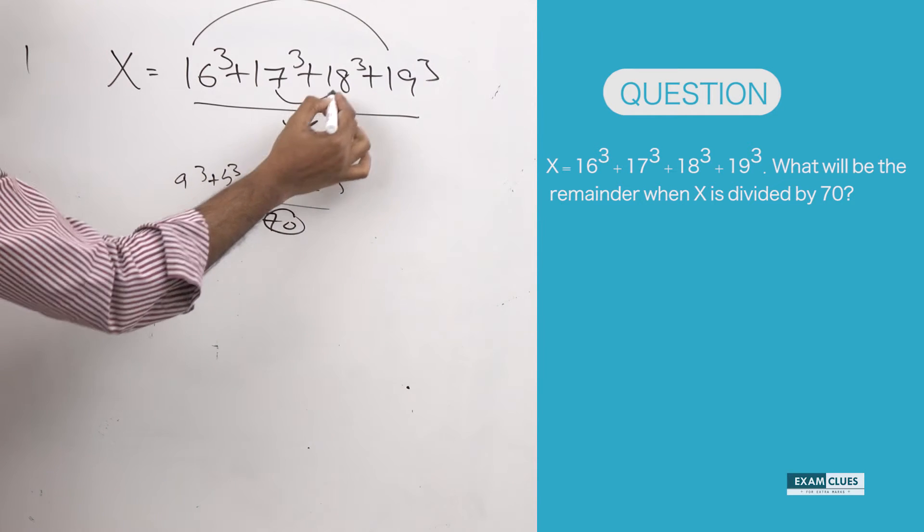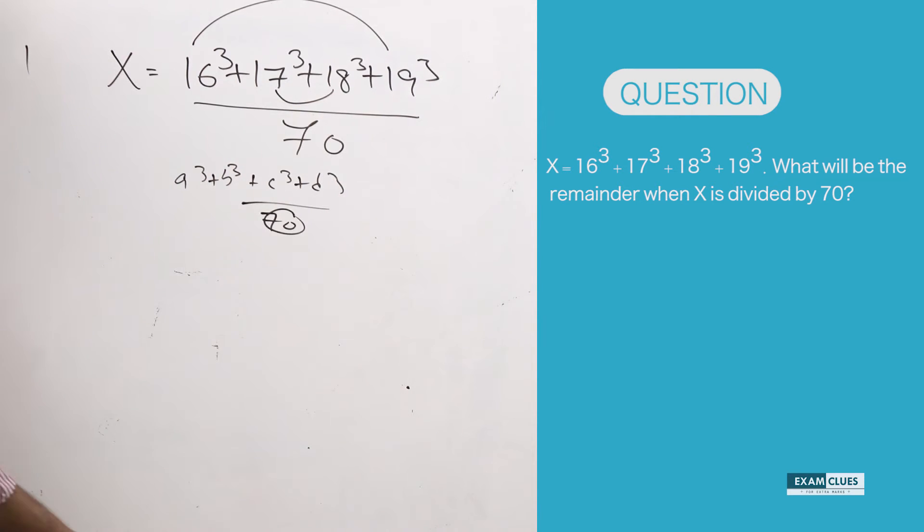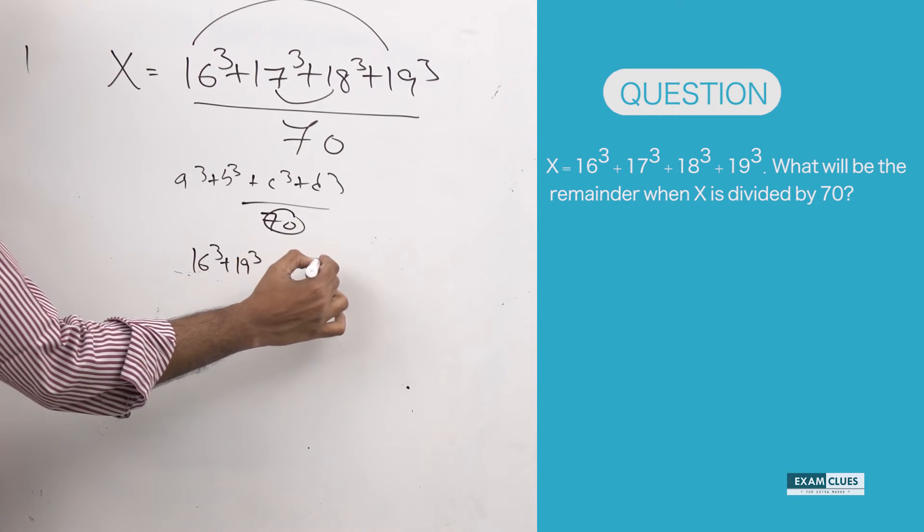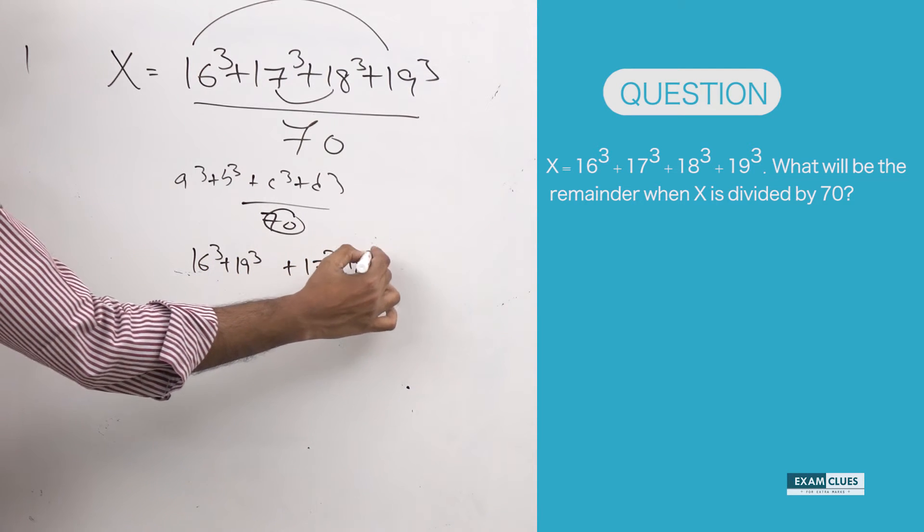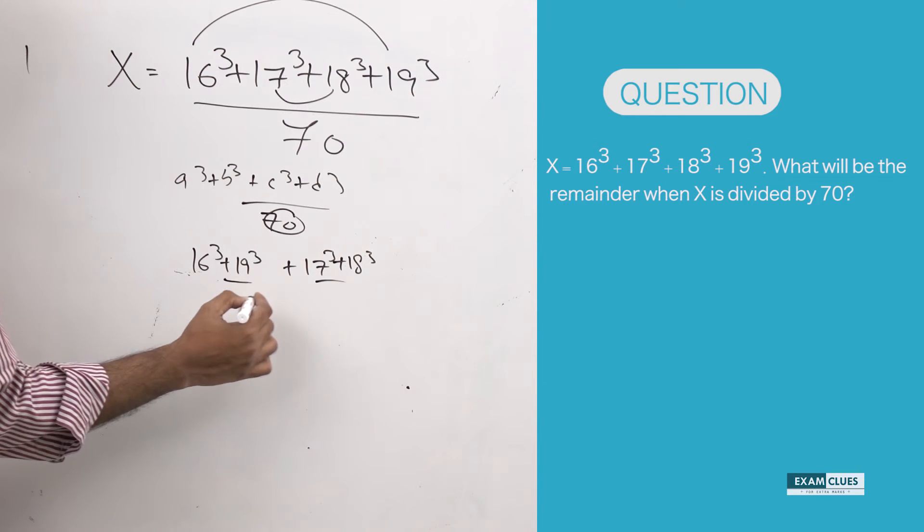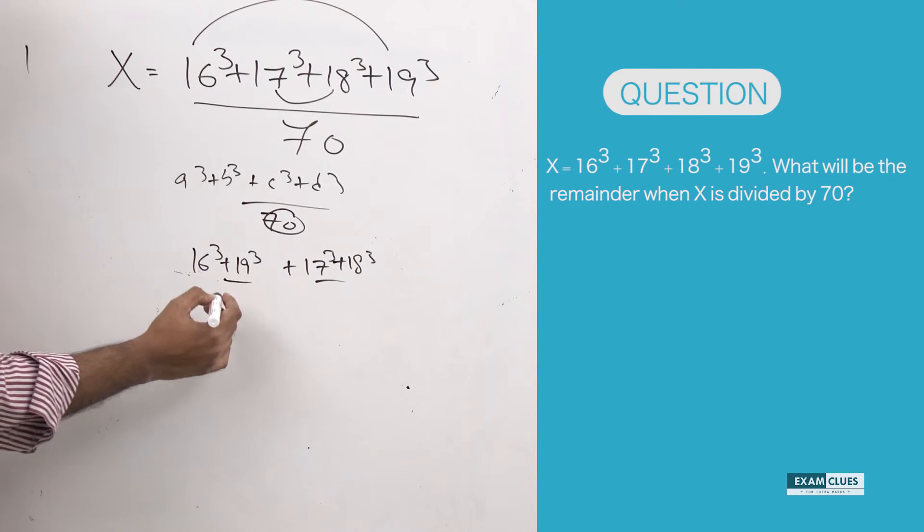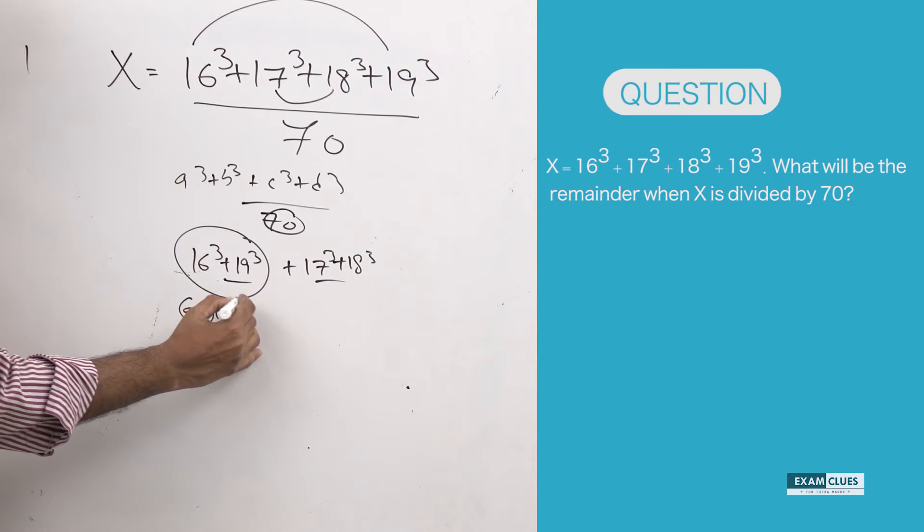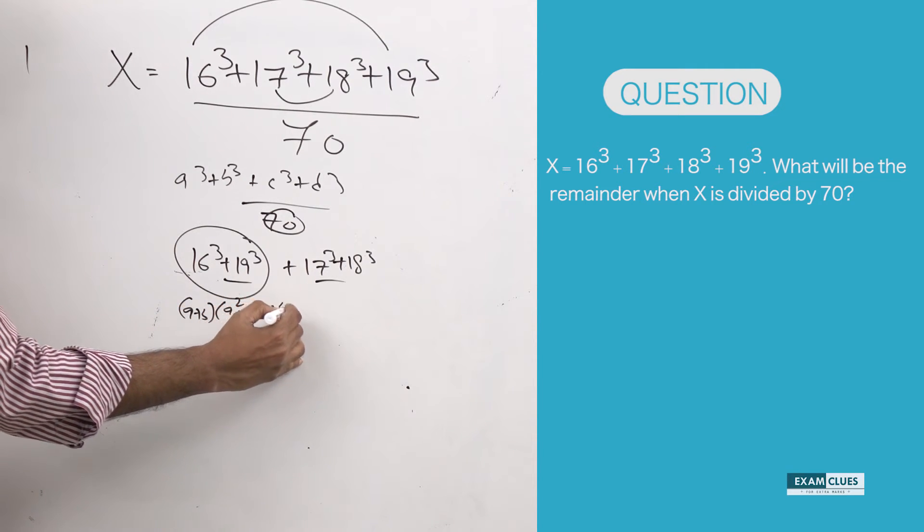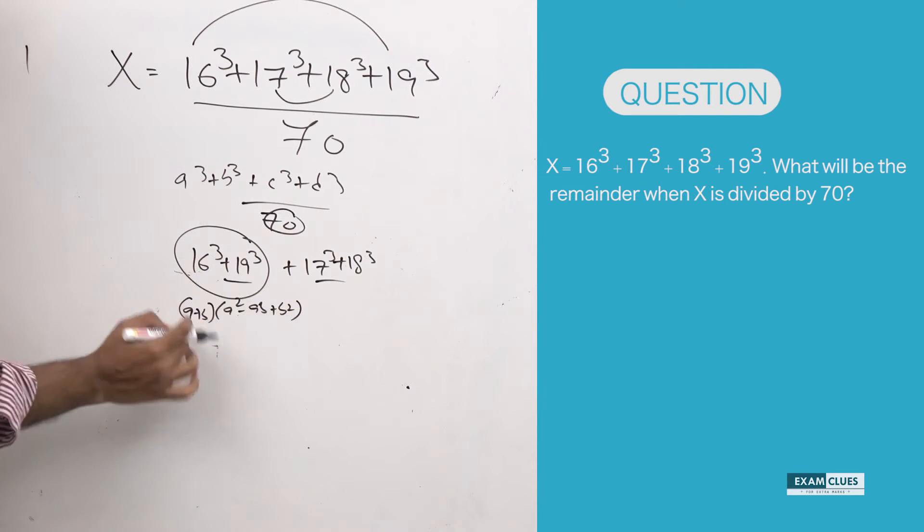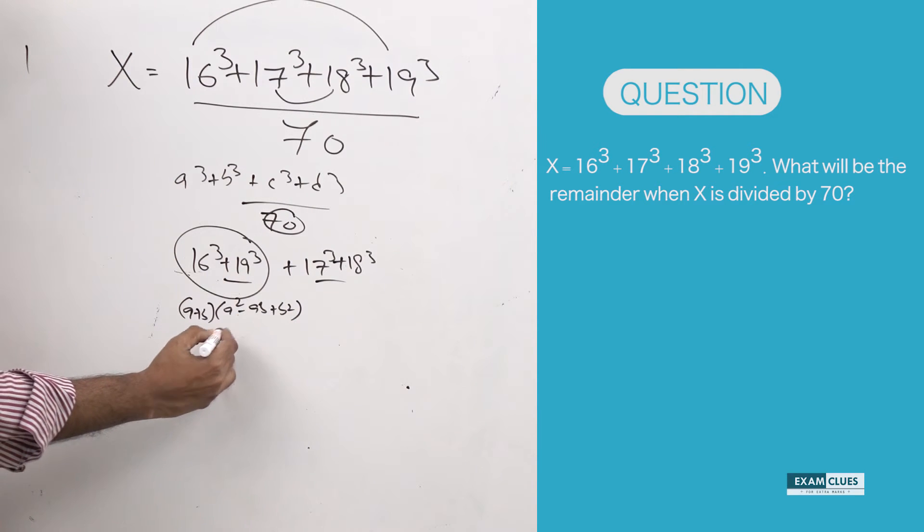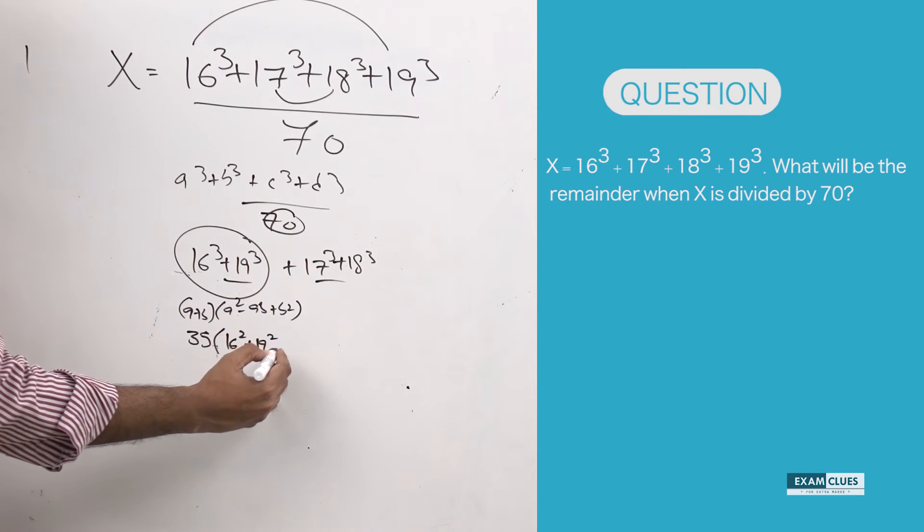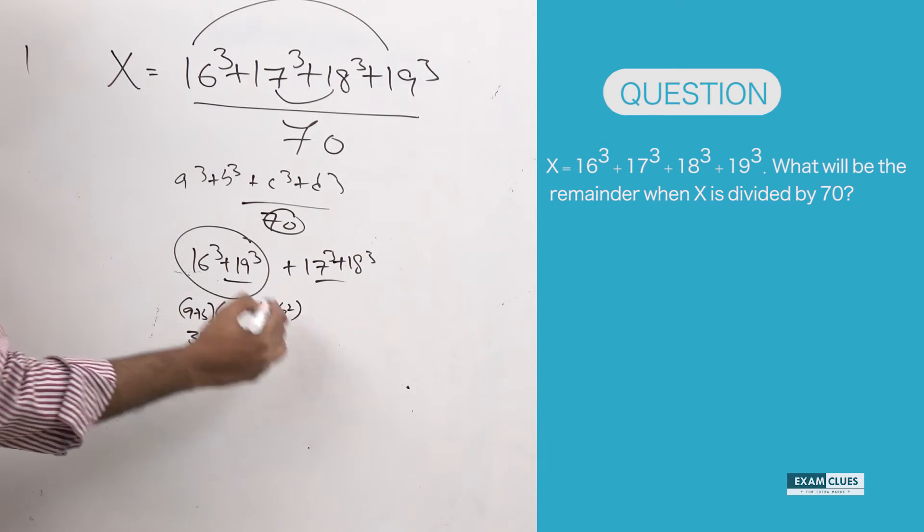16 cube plus 19 cube and 17 cube plus 18 cube. I'm writing 16 cube plus 19 cube plus 17 cube plus 18 cube. Now, this part would be definitely A plus B into A square minus AB plus B square, because this is A cube plus B cube.